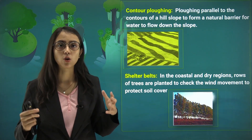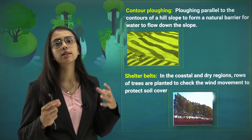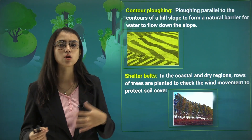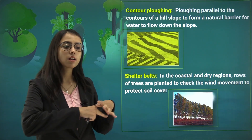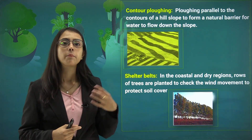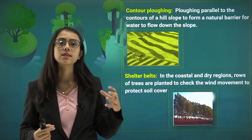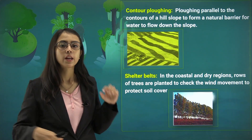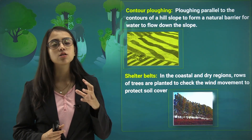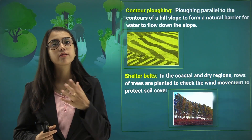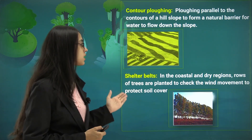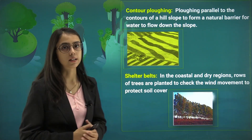Then we have shelter belts. Have you ever observed that in dry regions like Rajasthan or coastal areas, when there are large farms and lands, big trees are planted in the boundary region? This is to protect the soil from wind movement that erodes it. This is known as shelter belts.